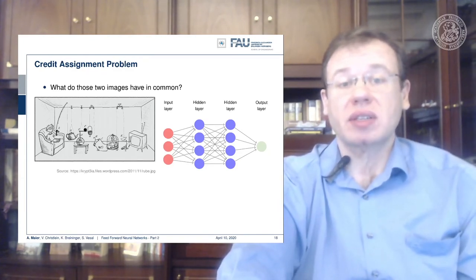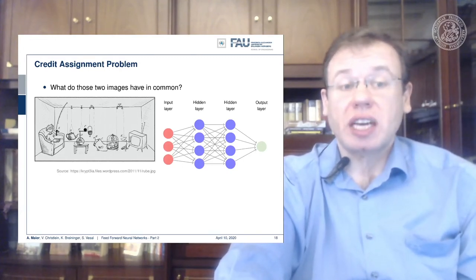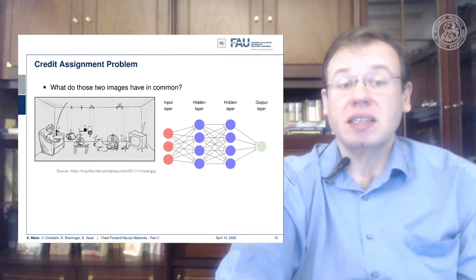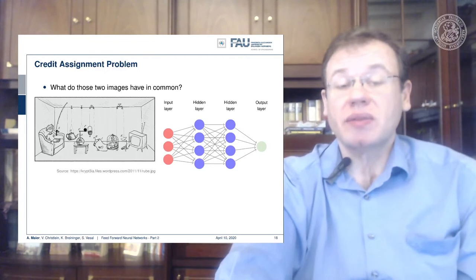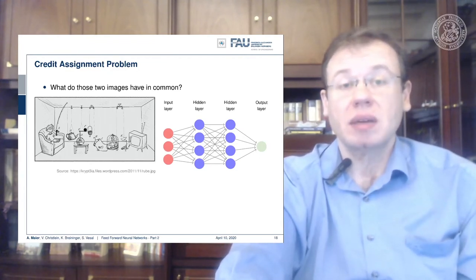We've already seen these hidden layers that cannot be directly observed, which brings us in a difficult situation. You may argue the image on the right is very similar to the one on the left, but if you change anything in this chain of events it may destroy the entire system.